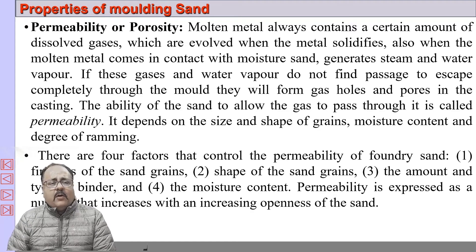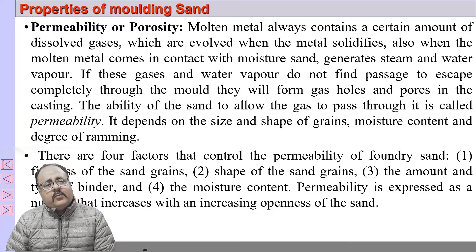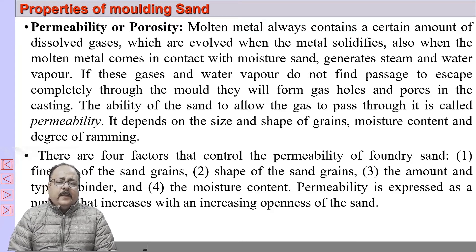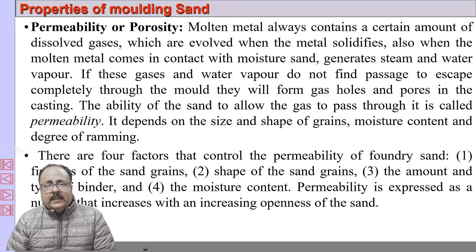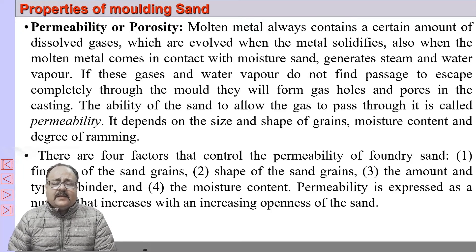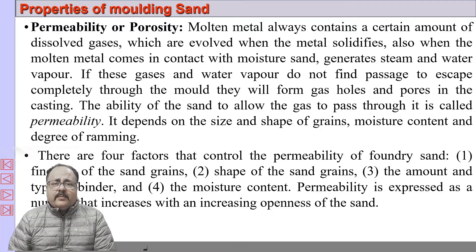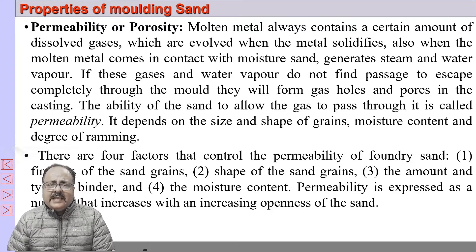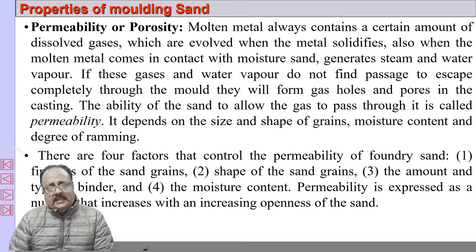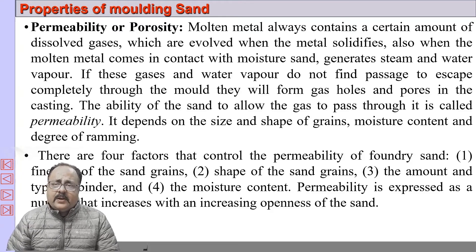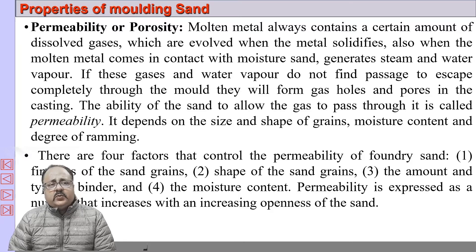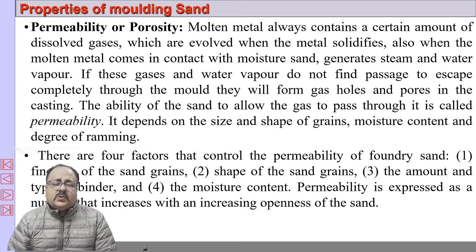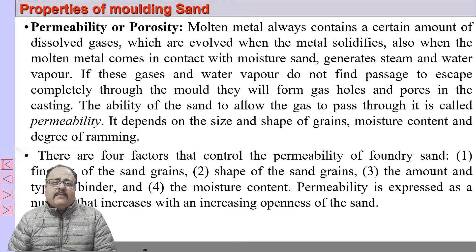The properties required of good molding sand: the first and most important is permeability or porosity. When molten metal is poured in the mold cavity, gases are evolved — the molten metal may have dissolved gases that must escape, and the temperature will cause moisture in the sand to evaporate into steam. Permeability is the property that allows gases to escape. High permeability means gases escape easily; low permeability means they do not. It is always desirable to have high permeability.